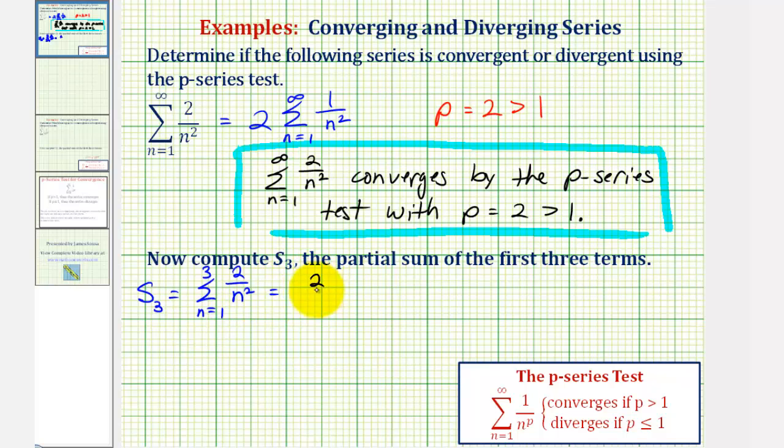So when n is one, we'd have two divided by one squared. When n is two, we'd have two divided by two squared. And then finally when n is three, we'd have two divided by three squared.